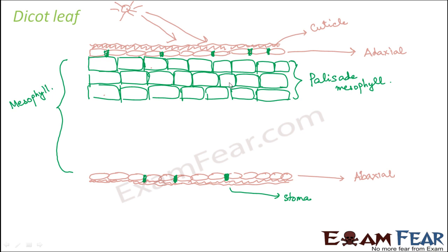The purpose of this palisade mesophyll layer is to trap sunlight. Since it is on the upper side, the intensity of sunlight on this layer will be more. More and more cells are compactly arranged so that more sunlight can be trapped. This layer traps the sunlight, and then we will see how photosynthesis takes place. So this is your upper mesophyll layer.